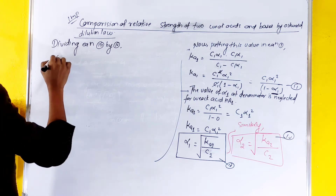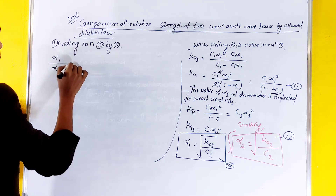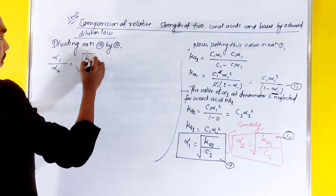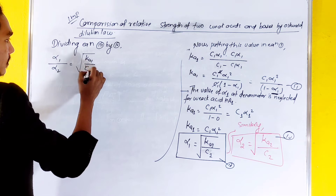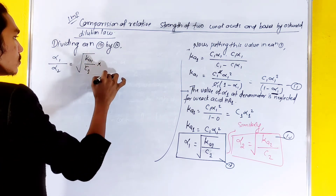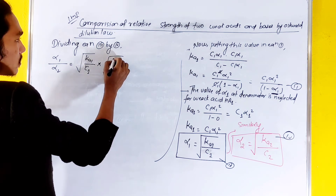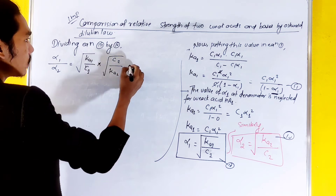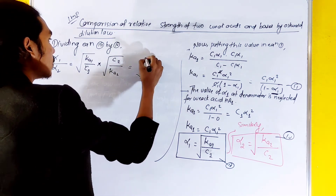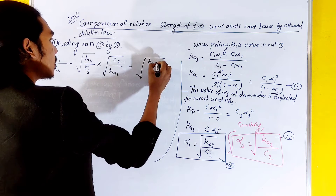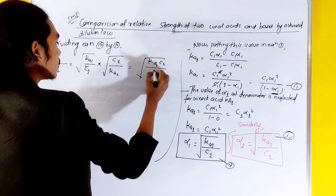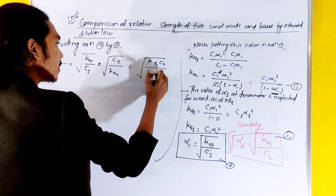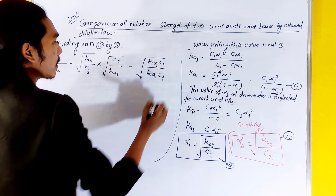Dividing equation 3 by equation 4, we get α1 divided by α2 is equal to the square root of (Ka1 divided by C1) into (C2 divided by Ka2), which equals the square root of Ka1·C2 divided by Ka2·C1.